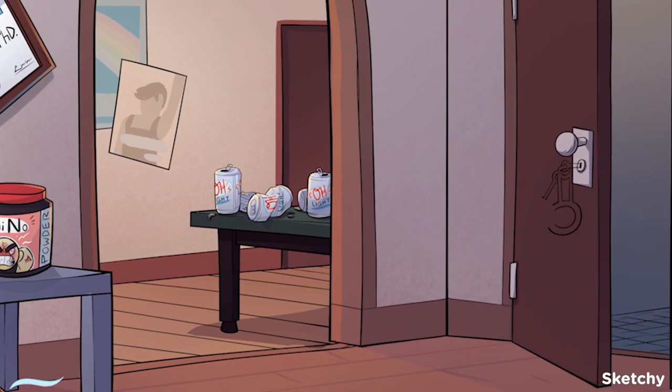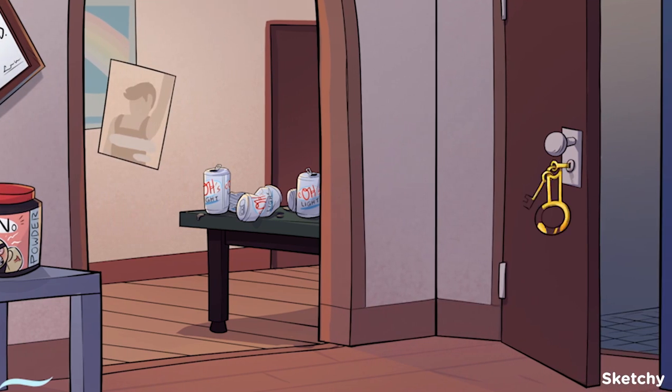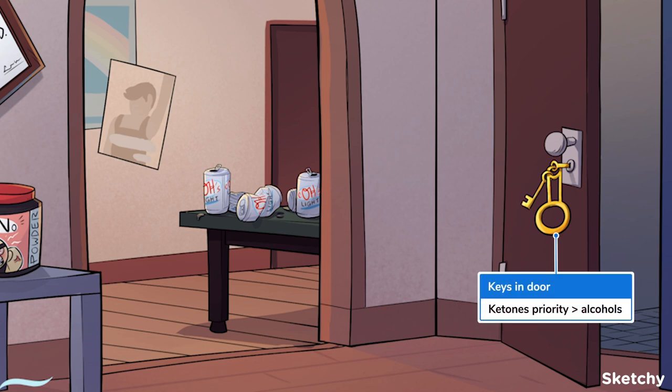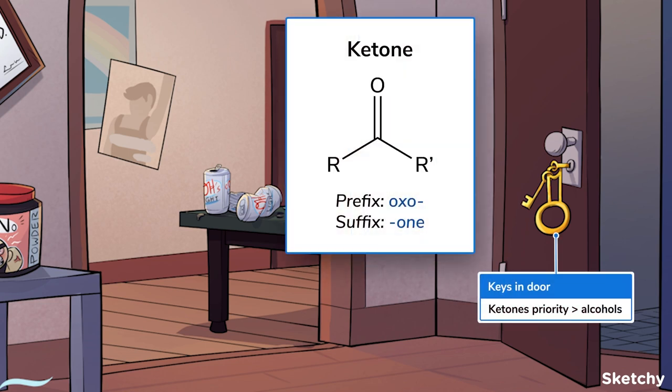Next, ranked higher than alcohols, we have ketones, which we've represented with these keys in the bathroom door. Ketones have a carbon-oxygen double bond, which allows for more electron delocalization than the single bond in alcohols. They're named with either the oxo, O-X-O, prefix when they're not the highest priority functional group, or the -one, O-N-E, suffix when they are the highest priority.